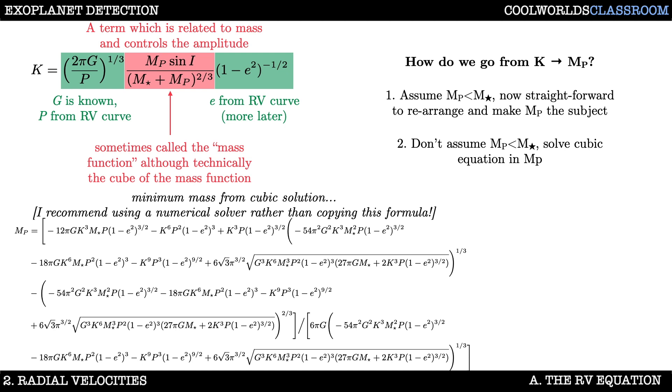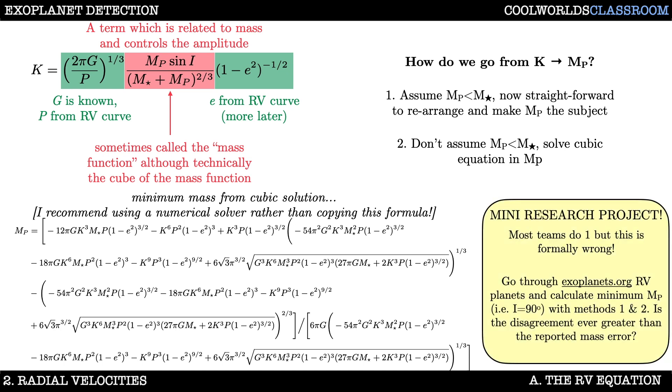As a mini research project, try calculating the mass of the planet from k, p, and e as listed in the exoplanets.org catalog using these two methods for a bunch of planets and see whether they disagree more than the formal errors. As I said, I don't know the answer to this, this is genuinely a novel research idea, so please go ahead, take it, and have some fun.